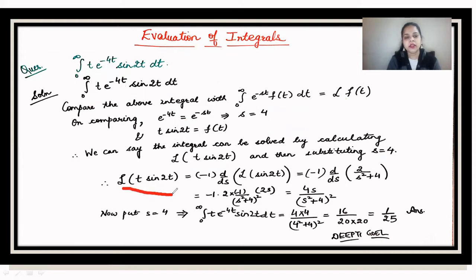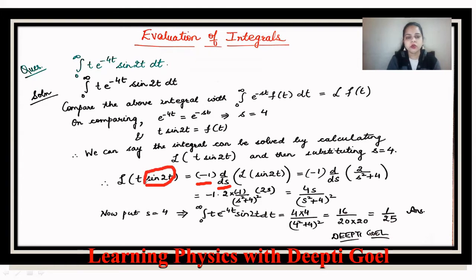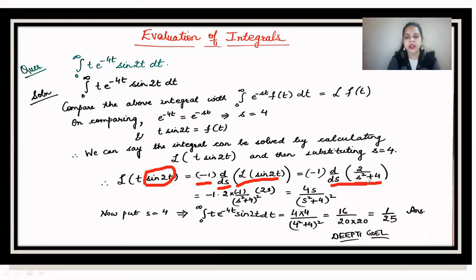To calculate L{t · sin(2t)}, we use the formula: L{t · f(t)} = (−1)^1 · d/ds [F(s)], which is the first-order derivative with respect to s. Here F(s) = L{sin(2t)} = 2/(s² + 4). So we need to differentiate 2/(s² + 4) with respect to s, and then substitute s = 4.